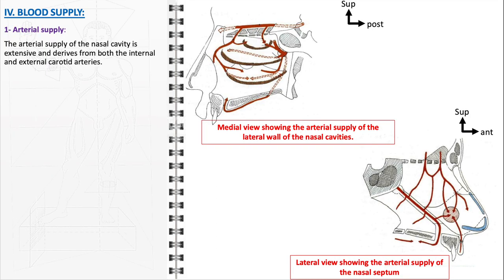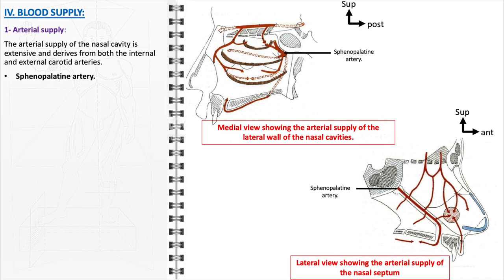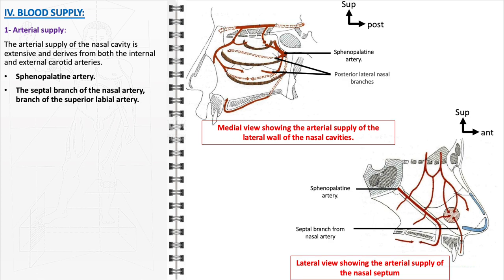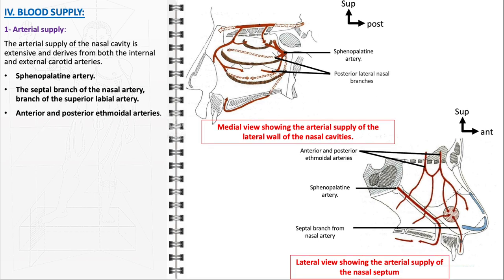The nasal cavity's arterial supply is both extensive and intricate, drawing blood flow from branches of both the internal and external carotid arteries. From the external carotid artery, the maxillary artery emerges as a major contributor, providing branches such as the sphenopalatine and greater palatine arteries. Additionally, the external carotid artery gives rise to the superior labial and lateral nasal arteries, which predominantly supply the vestibule and respiratory portions. The internal carotid artery's contribution comes via the ophthalmic artery, which branches off into the anterior and posterior ethmoidal arteries, responsible for vascularizing the roof of the nasal cavity, including the superior part of the nasal septum and the lateral nasal wall.